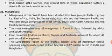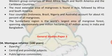Next topic: mangroves. Mangroves of the world have been divided into two groups. The Eastern group includes East Africa, India, Southeast Asia, Australia and the Western Pacific. The Western group comprises West Africa, South and North America, and Caribbean countries. The most extensive area of mangrove is found in Asia, followed by Africa and then South America. Four countries — Indonesia, Brazil, Nigeria, and Australia — account for about 41 percent of all mangroves. The Sundarbans region is the world's largest area of mangrove forest, spanning approximately 1 million hectares across India and Bangladesh.